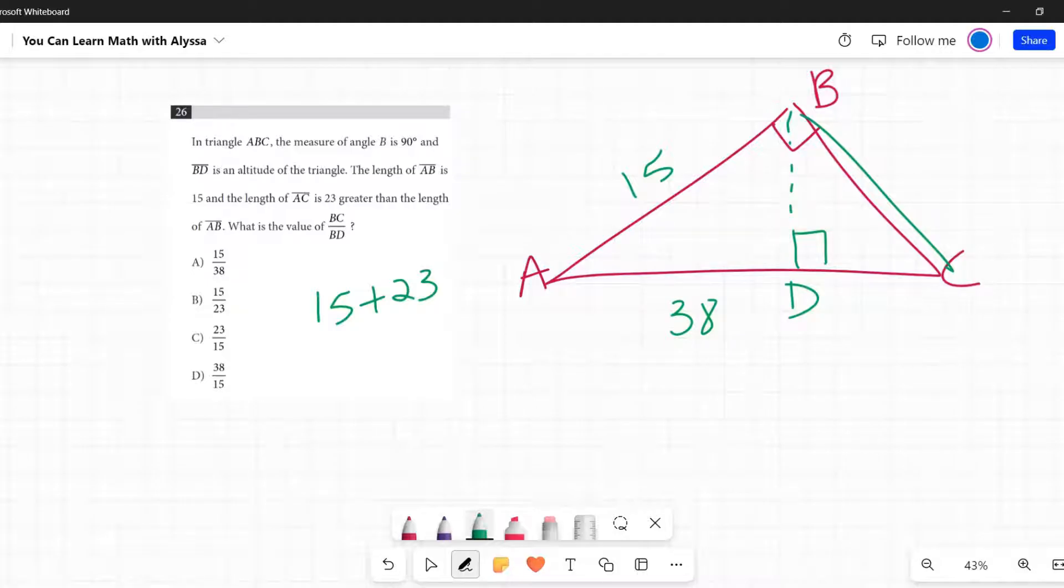Wait, what? Do I need to do like Pythagorean theorem to figure this out, but then how do I figure out the altitude?